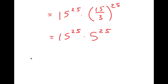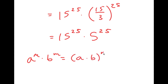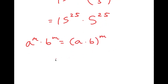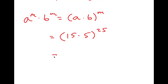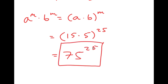Another property of exponents is that if I have a to the power of m times b to the power of m, this is equal to a times b to the power of m. So this is going to equal 15 times 5 to the power of 25, which is equal to 75 to the power of 25. So this is my answer.